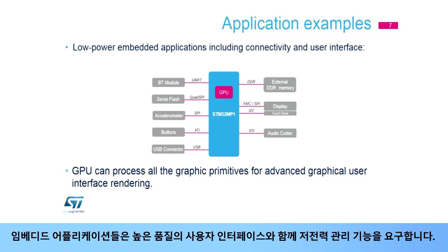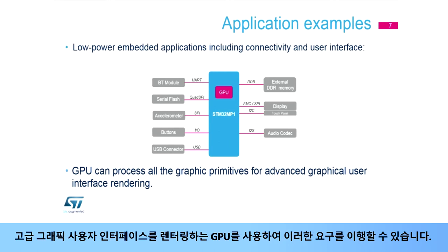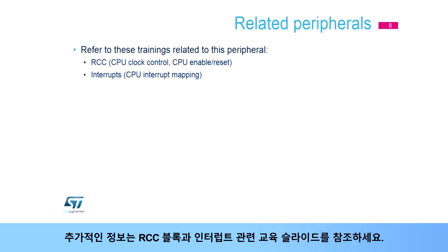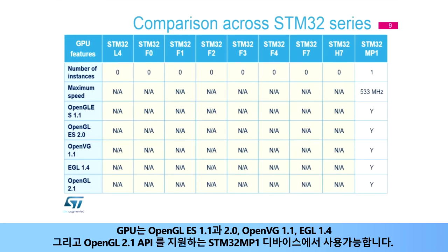Embedded applications require low-power management functions together with a high-quality user interface. This can be achieved using the GPU to render advanced graphical user interfaces. You can refer to the training slides related to the RCC block and interrupts for additional information. The GPU is available on STM32MP1 devices with OpenGL ES 1.1 and 2.0, OpenVG 1.1, EGL 1.4, and OpenGL 2.1 API support.